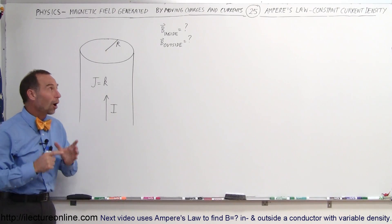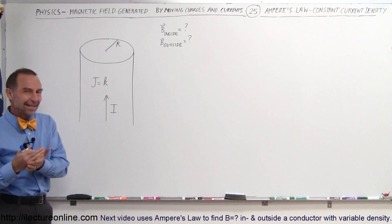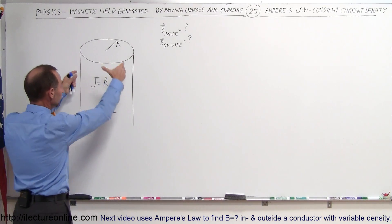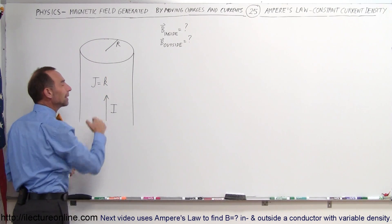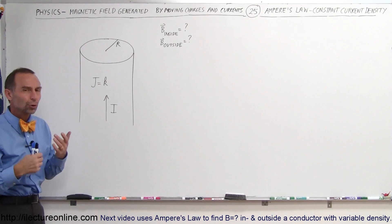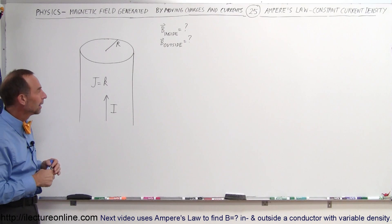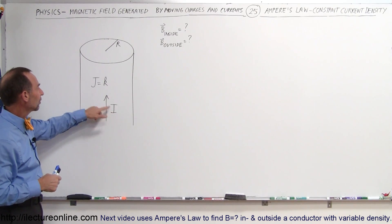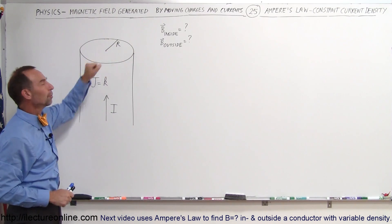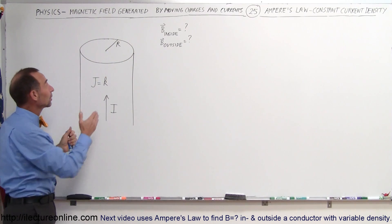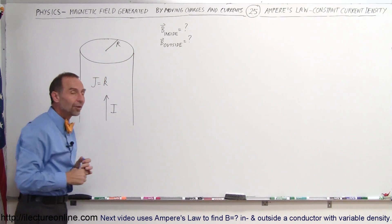Welcome to our lecture. We're going to use Ampere's law to find the magnetic field inside and outside a conductor. We have a conductor with current running in the upward direction. The current density is equal to k, k being a constant, meaning the current is the same everywhere inside the conductor. The radius of the conductor is equal to big R. We want to find the magnetic field anywhere inside and anywhere outside the conductor.